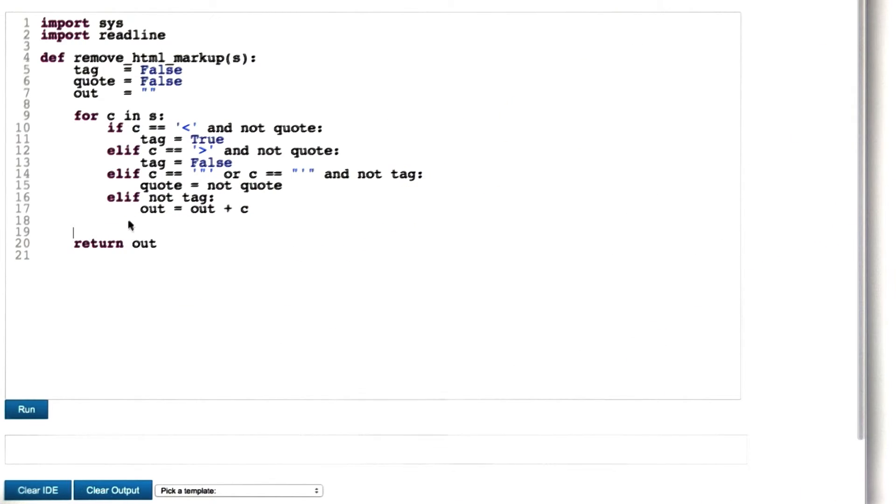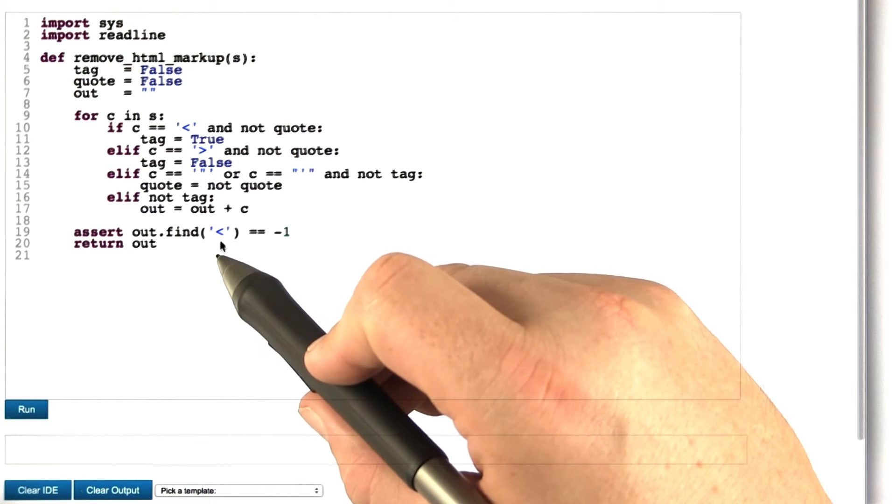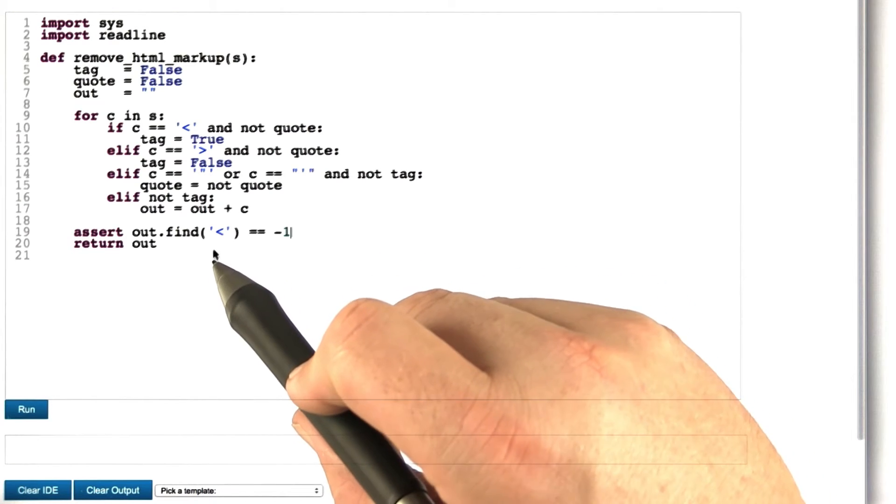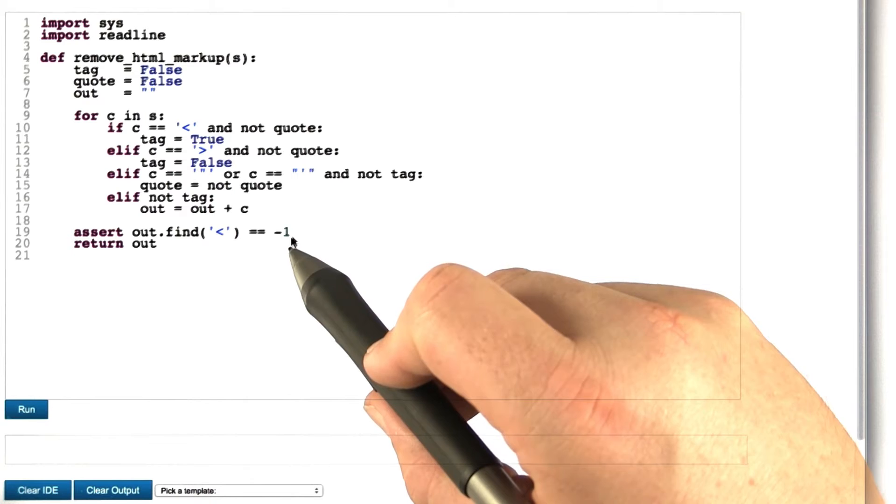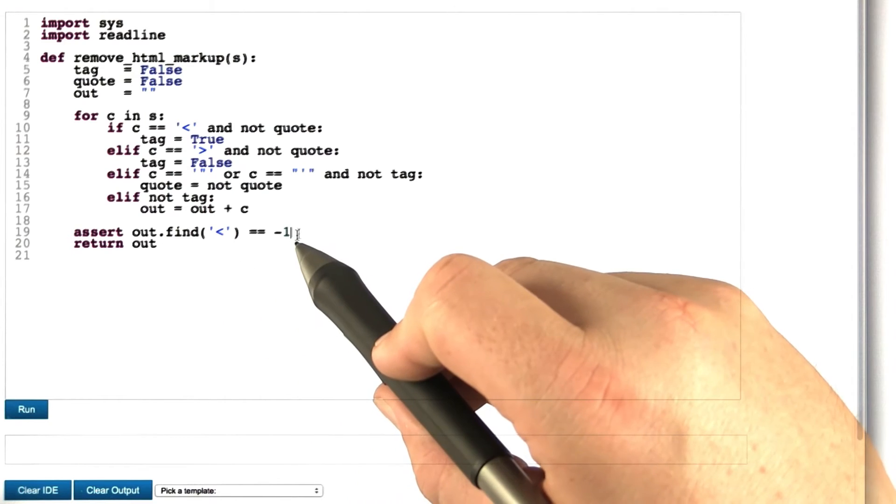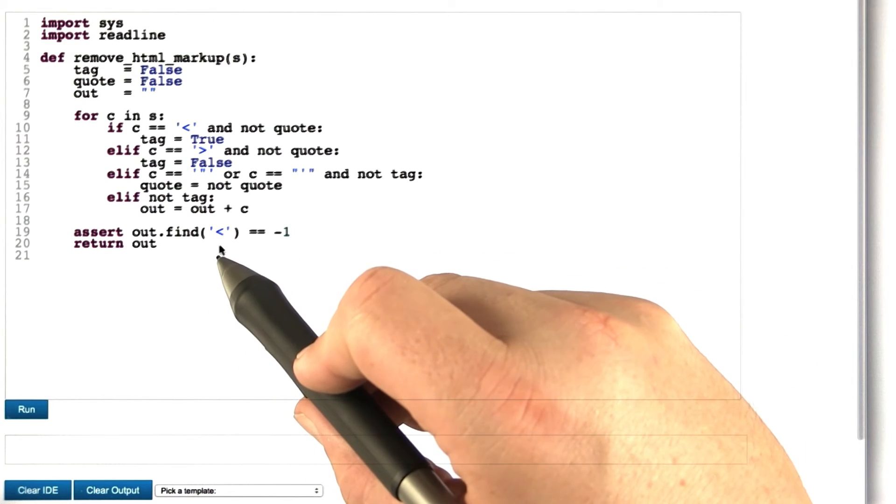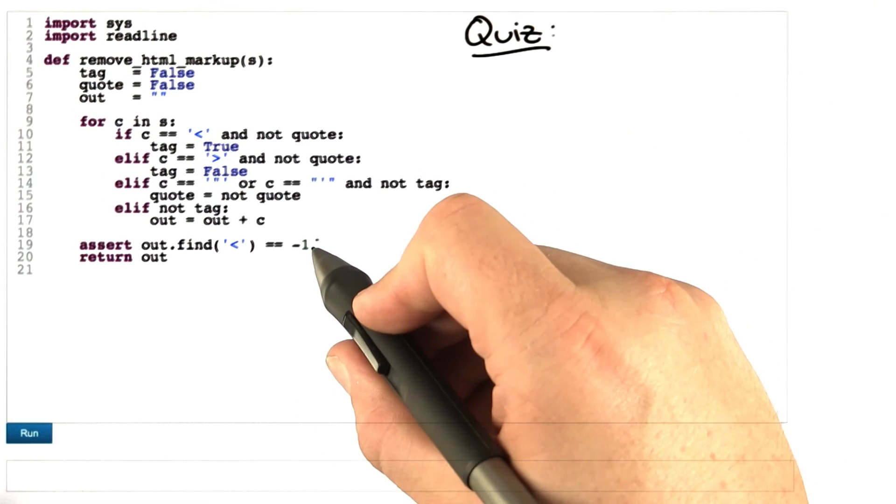Such an assertion could be something like this. We simply check whether there is any less than sign, that is the beginning of an HTML tag, in the output. We assume there is none, and if there would be one, then the assertion would immediately fail. So here comes the quiz.